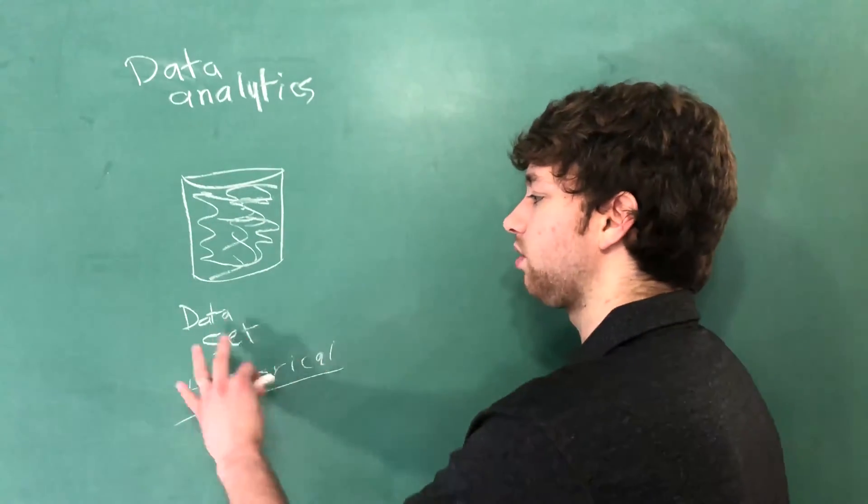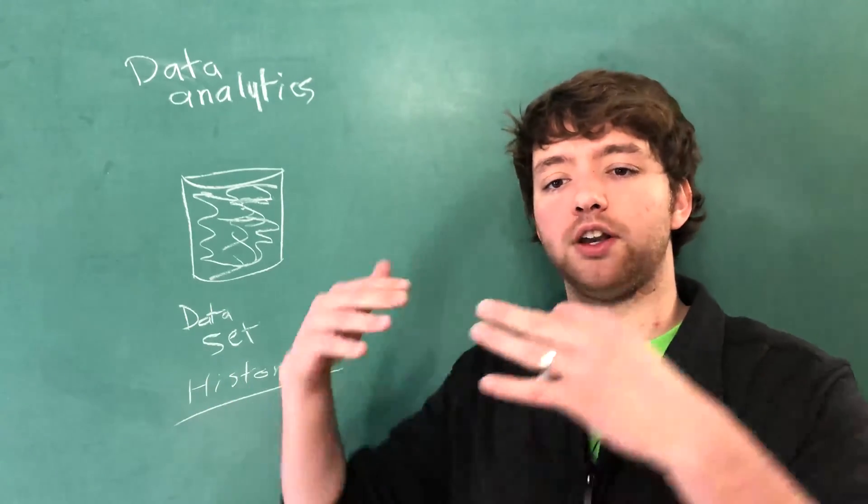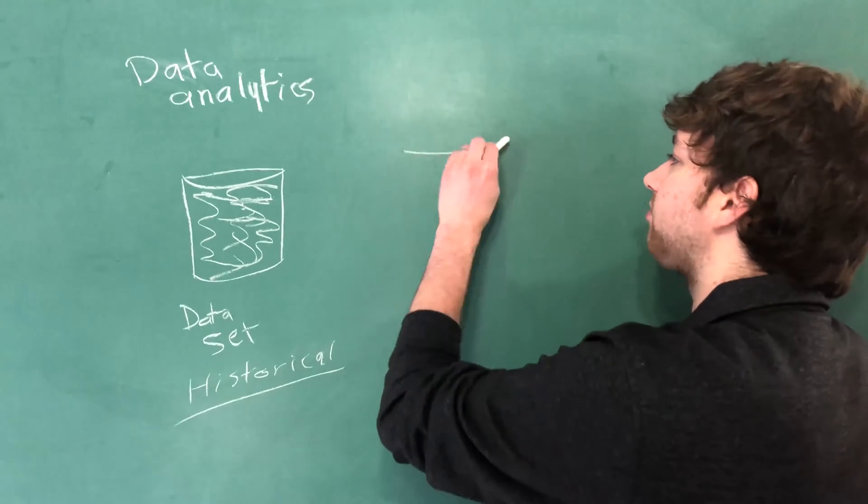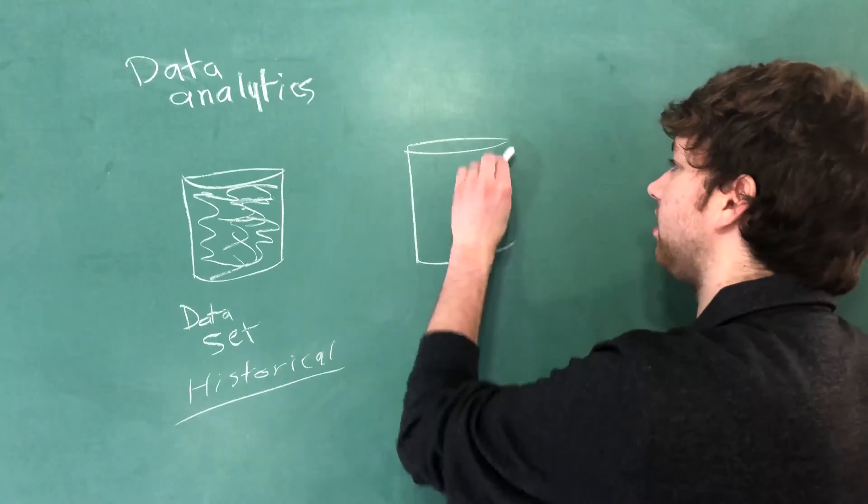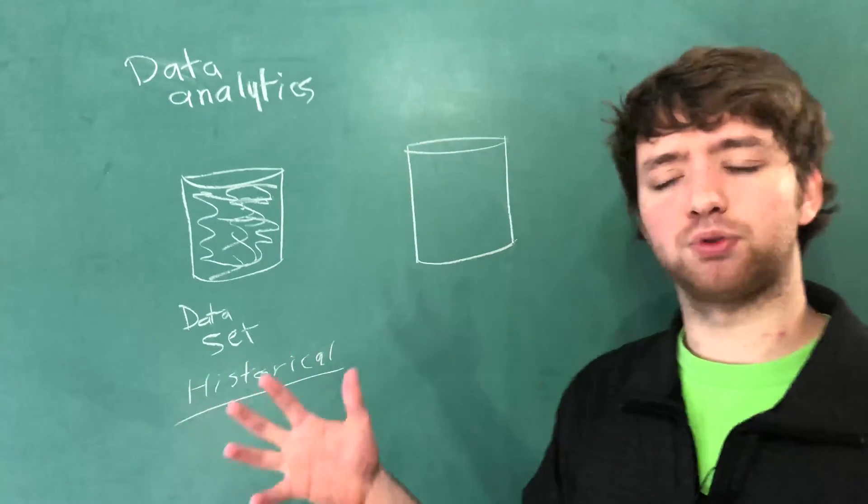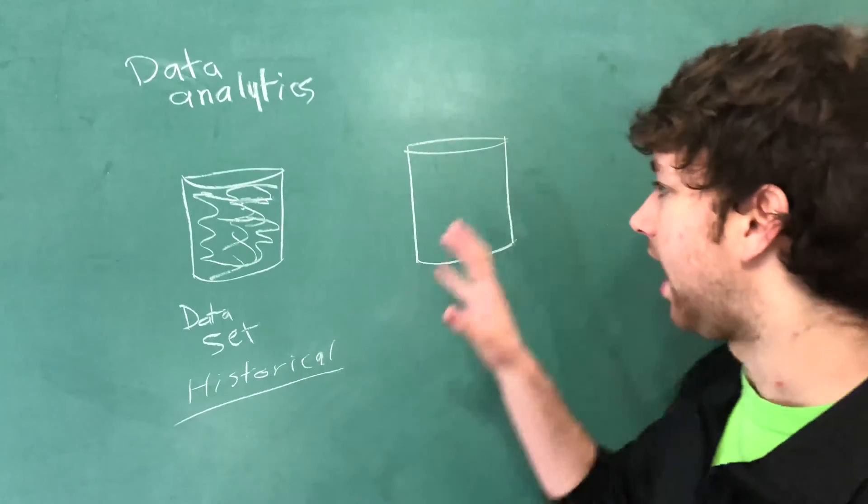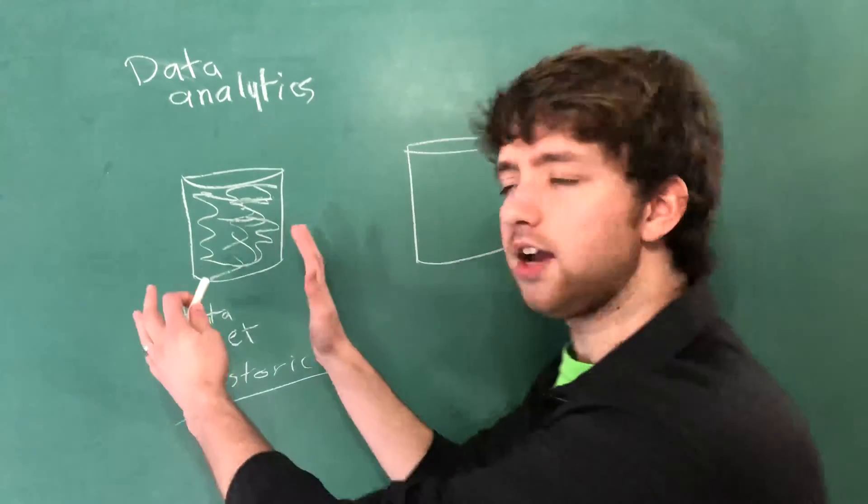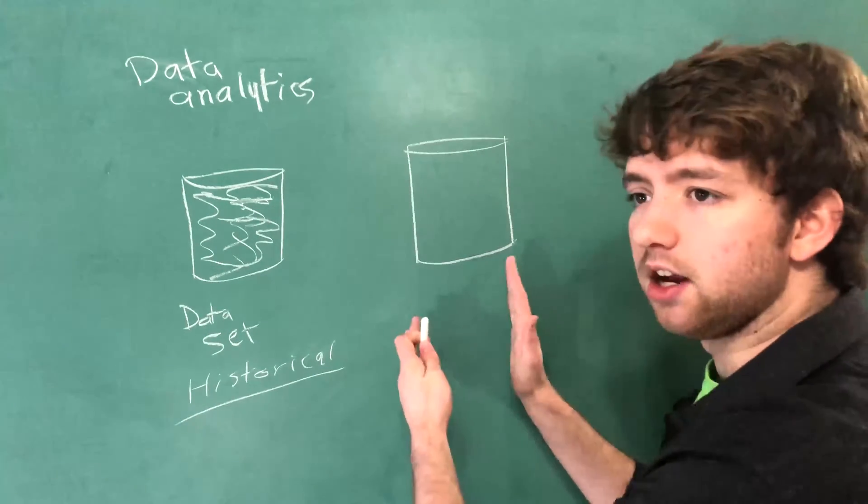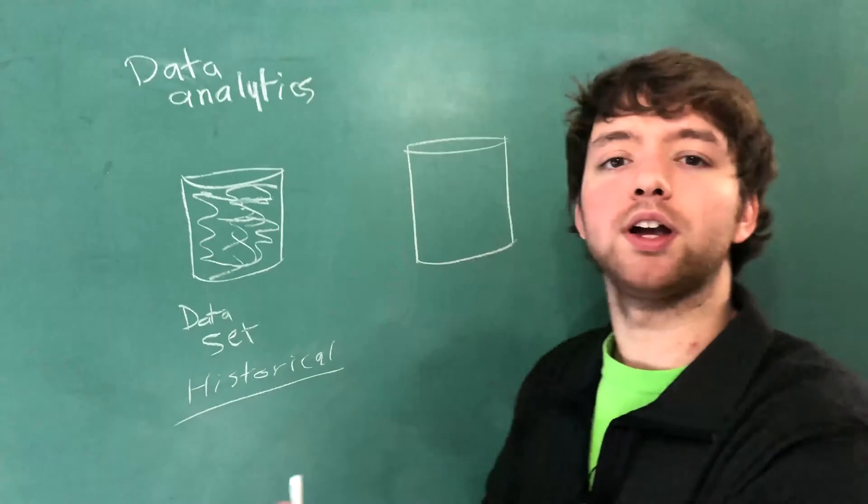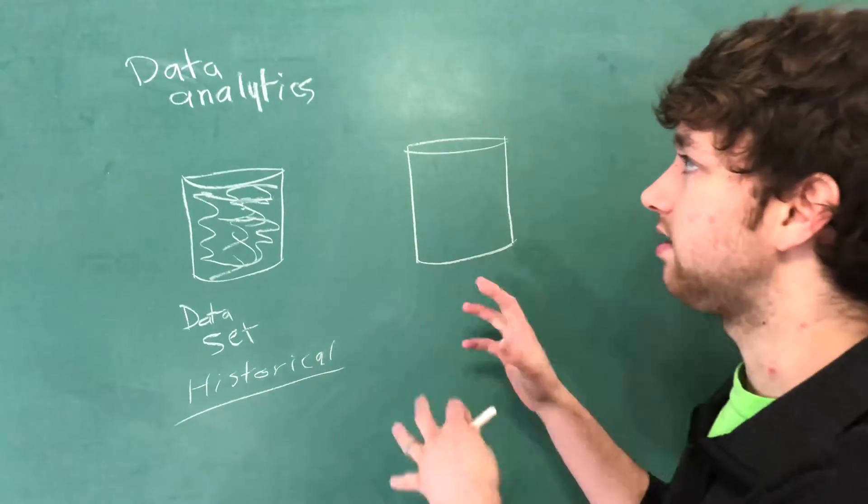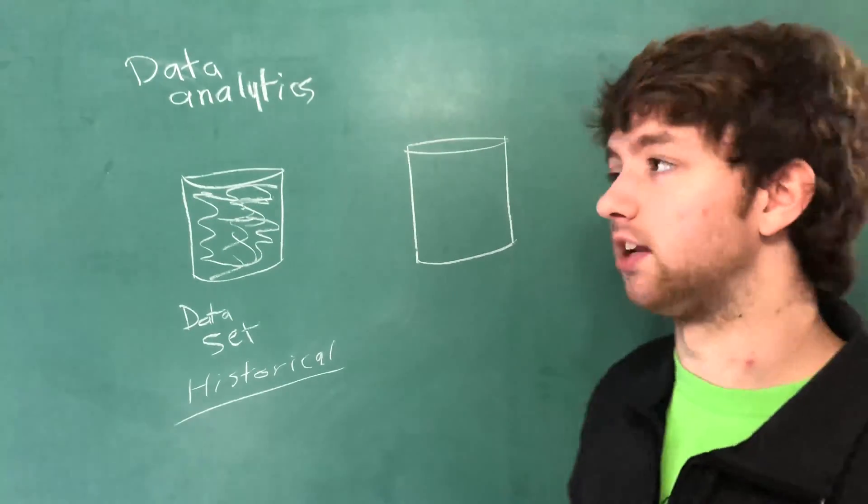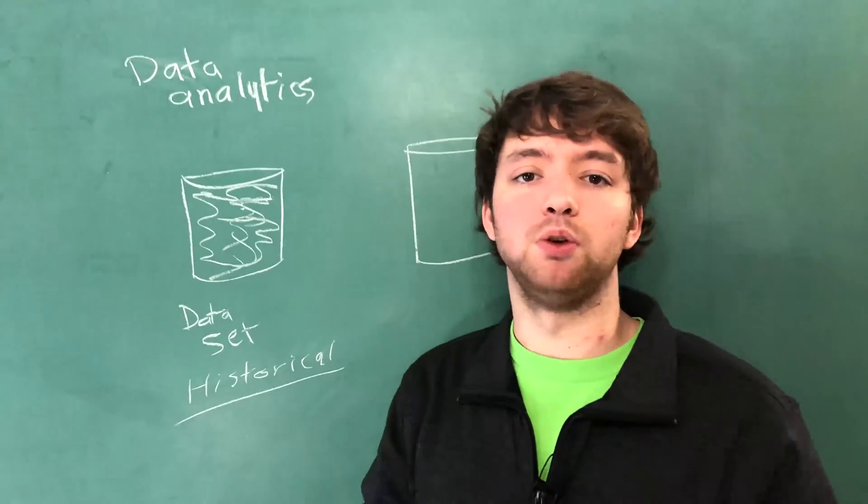Once we have that historical data set we can use that on modern or future data. So think now we have people on our website and they are feeding us a bunch of data. They're looking at all these products, they're making purchases. How do we take this data set and use it on modern data to predict what kind of products they are interested in? That is the field of data analytics and specifically if we're talking predictive analytics we're talking about predicting what people are interested in.